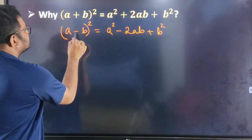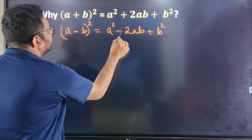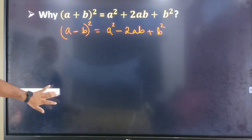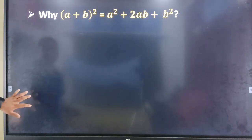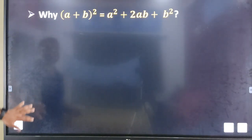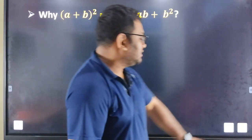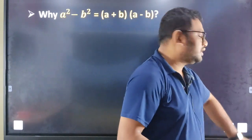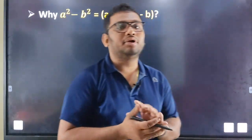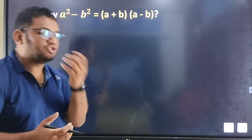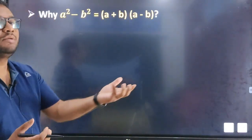Meaning, if you want to add minus, then 2ab becomes minus. We need to write a question. If we ask questions about classes, we can use this formula.